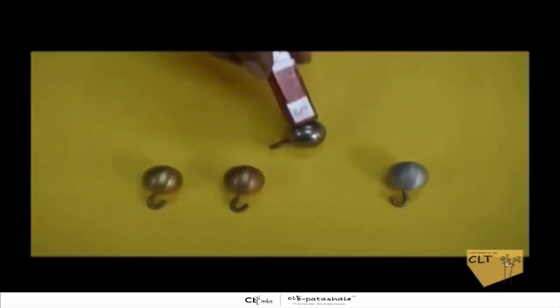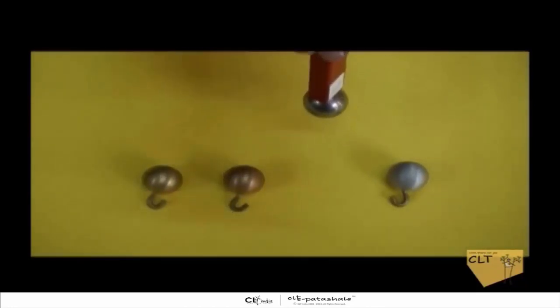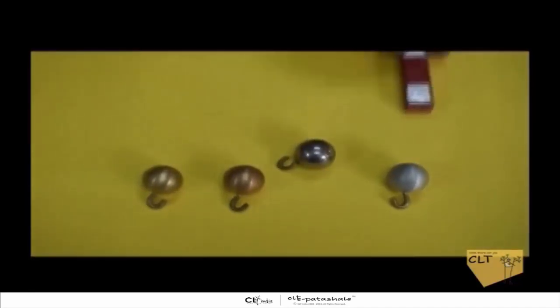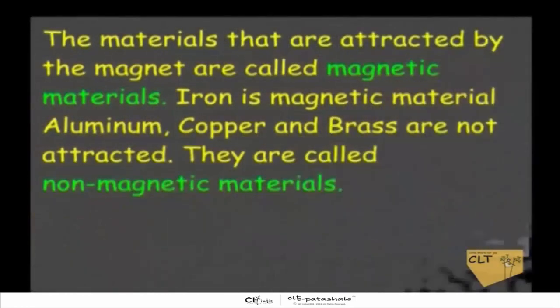You will observe that some of the metals are attracted to the magnet and some are not. The materials that are attracted by the magnet are called magnetic materials. Iron is a magnetic material.